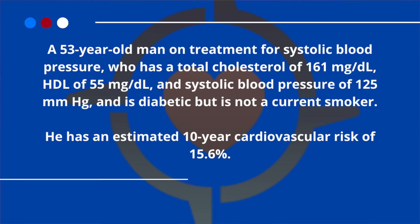In another example, a patient has a total cholesterol of 161, HDL of 55, and systolic blood pressure of 125, and is diabetic but is not a current smoker. They have an estimated 10-year CVD risk of 15.6%. If you'd like to work out your individual risk, follow the link below in the description — it'll take you straight to the page where you can access this calculator for free and work out your percentage.